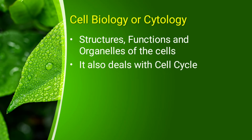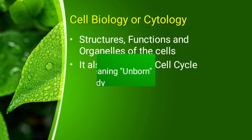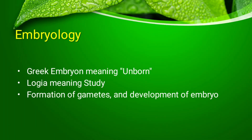The next branch is embryology. Embryo means something that is not yet born, and logia means study. The formation of gametes and the development of the embryo is known as embryology. We have gametes which are called sex cells — the sex cells present in male and female. We have egg cells as an example.